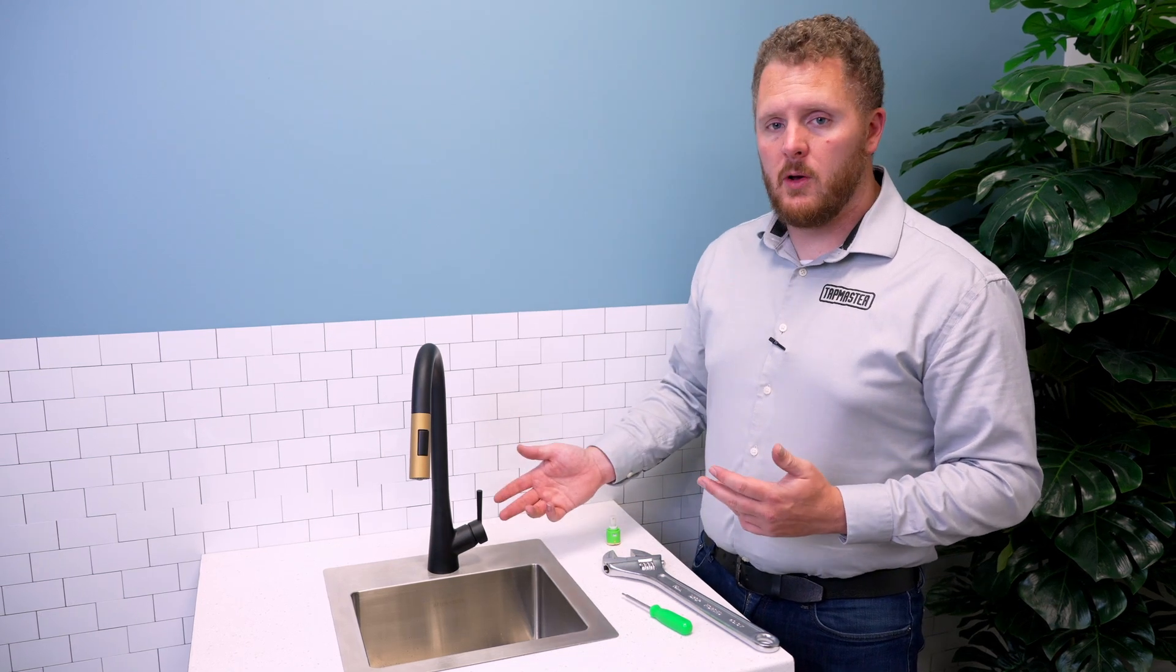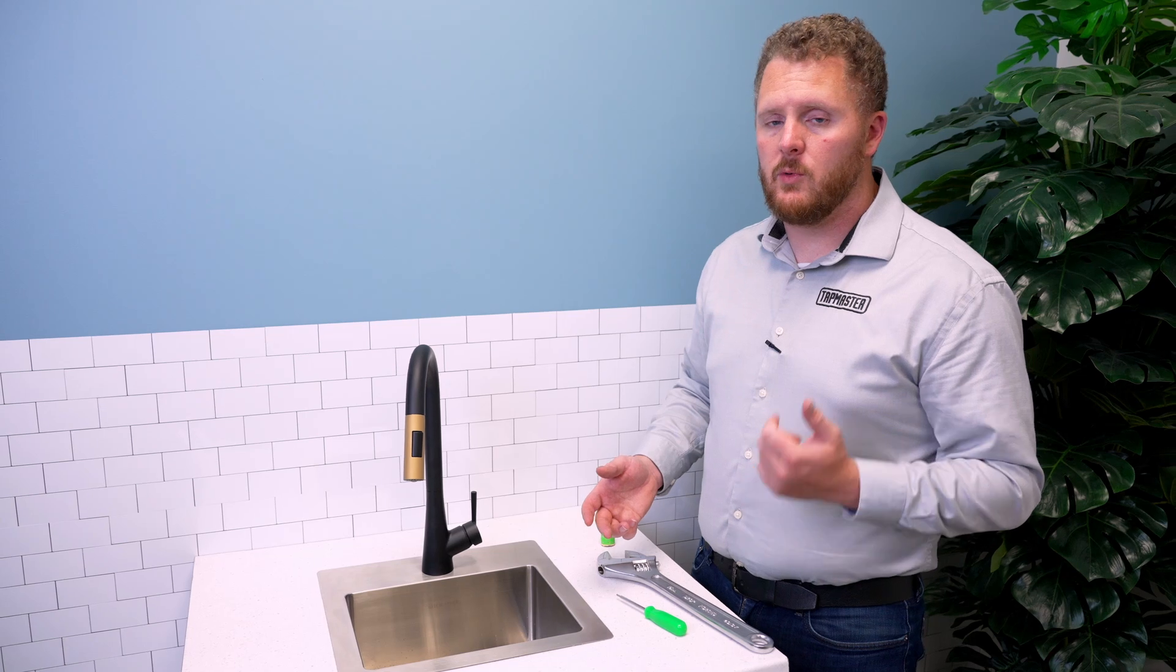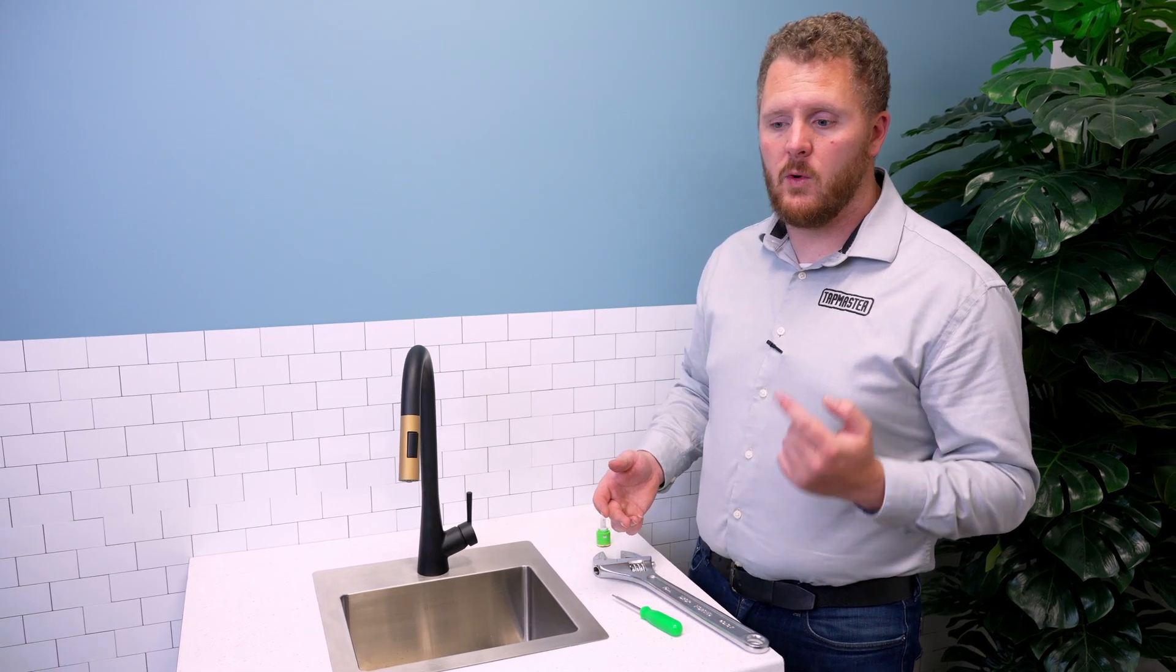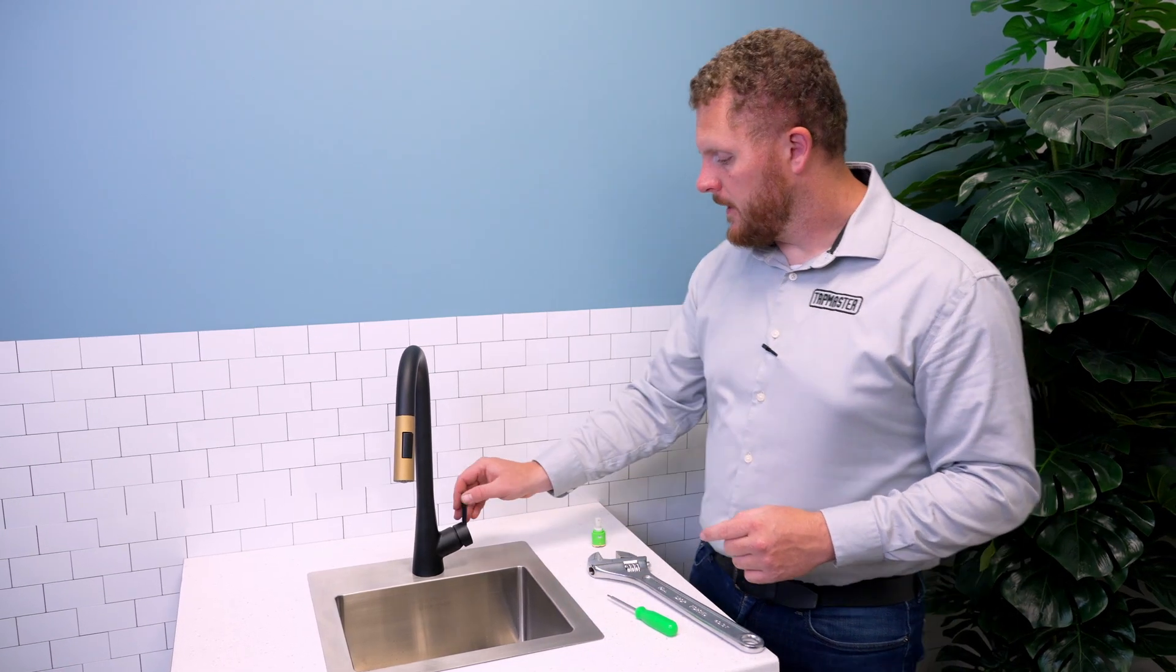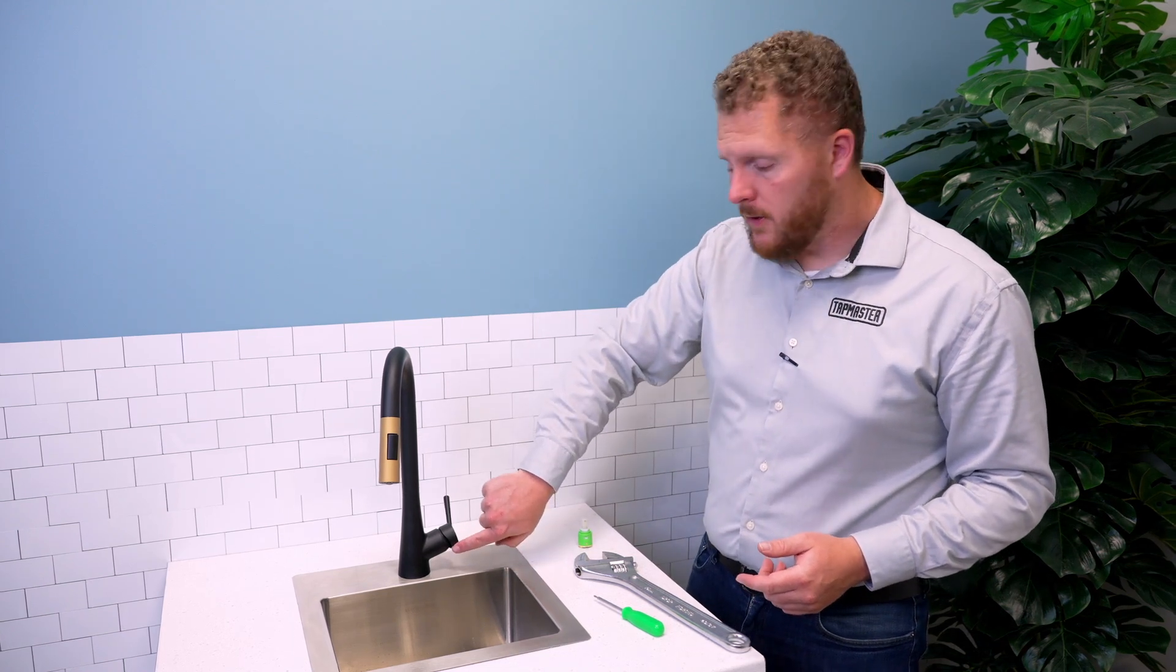We're going to show you on one of our faucets here, but the same process really applies to any faucet. First thing you want to do is turn off the water to the faucet using the water shutoff valves below, and then you find a little hole on the back of your faucet handle.